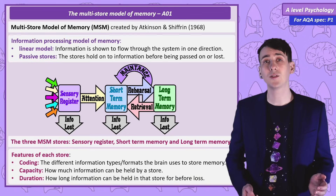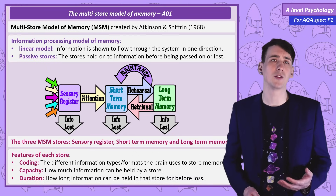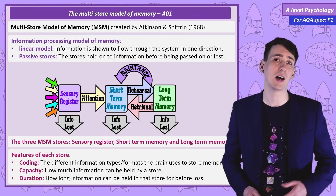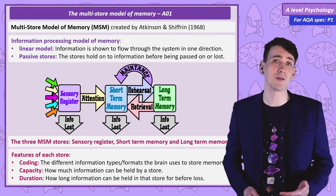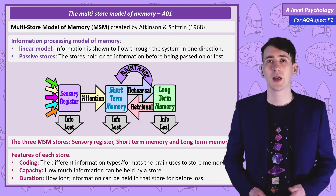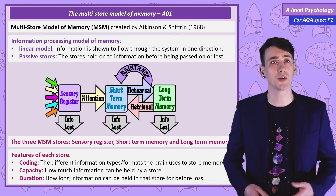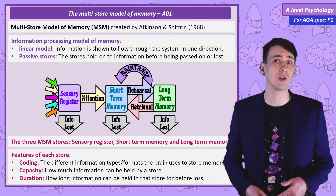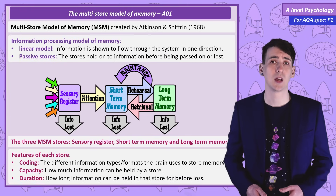Coding is the format the information is stored in. In a similar way that your phone's memory will store image and music files differently, the brain is thought to have different ways of coding information. Capacity means how much those stores can hold, and duration is how long the information can be held for.